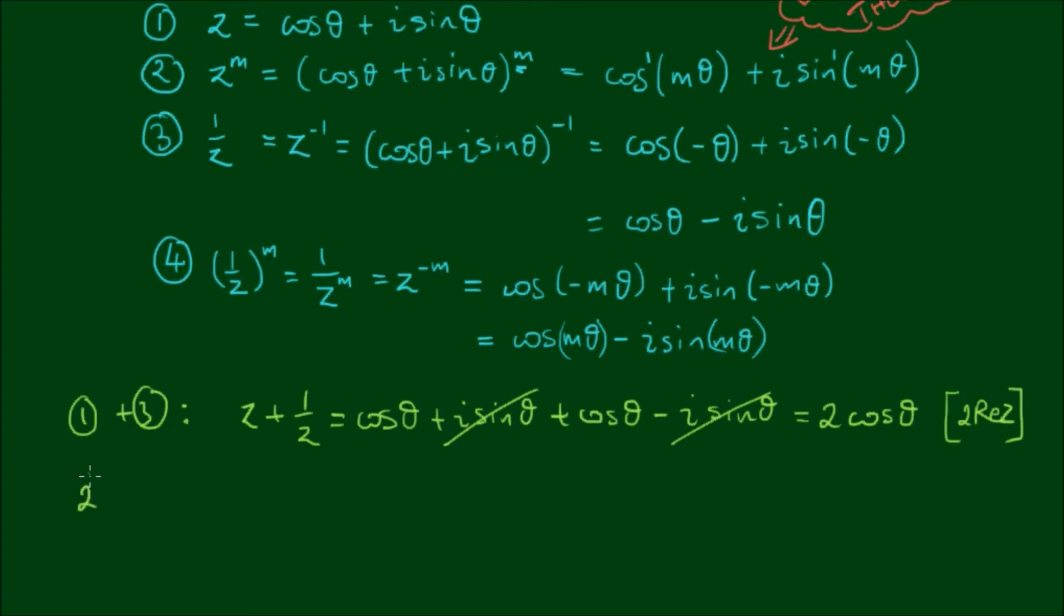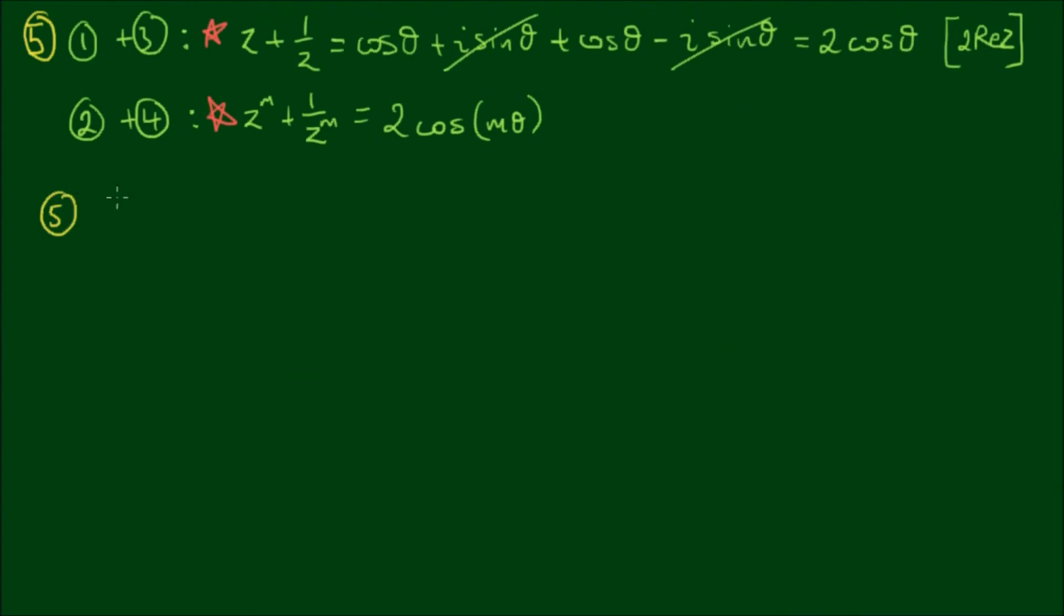Similarly for equations 2 and 4, we have z to the mth power plus 1 on z to the mth power is equal to 2 cos m theta. These are two relationships that we'll need to take note of. In fact, let's call this one equation 5.